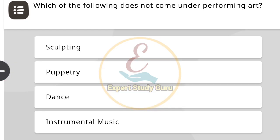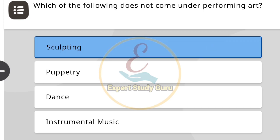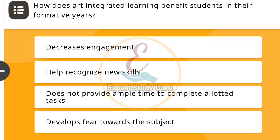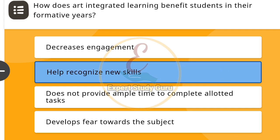Which of the following does not come under performing arts? The correct answer is sculpting. Next: How does art integrated learning benefit students in their formative years? The correct answer is it helps recognize new skills.